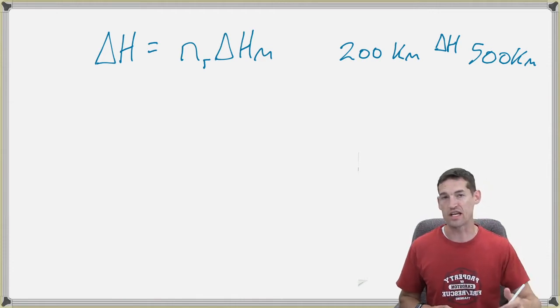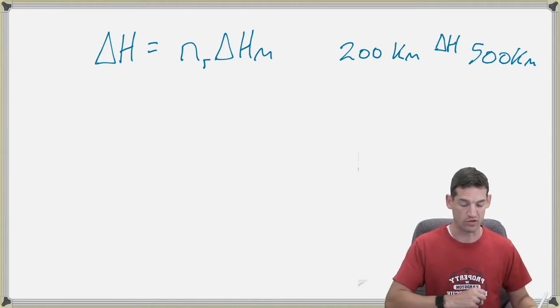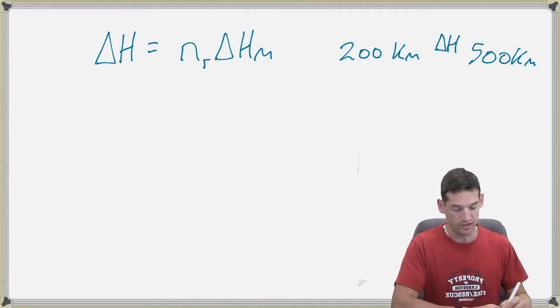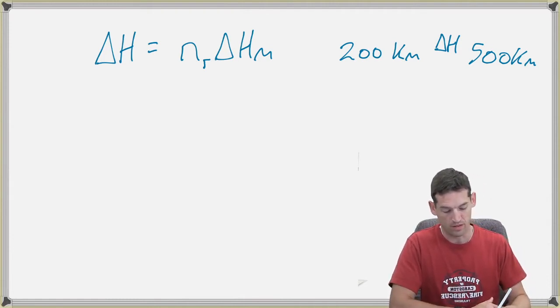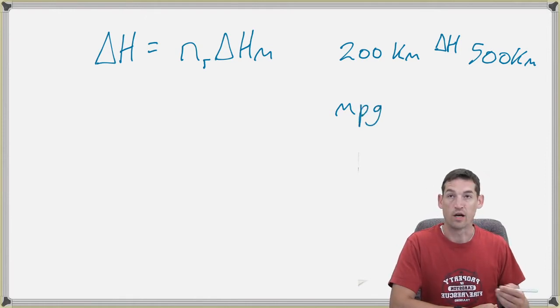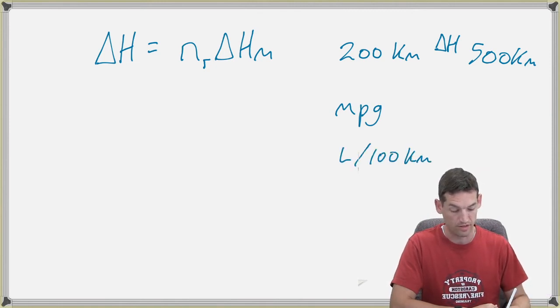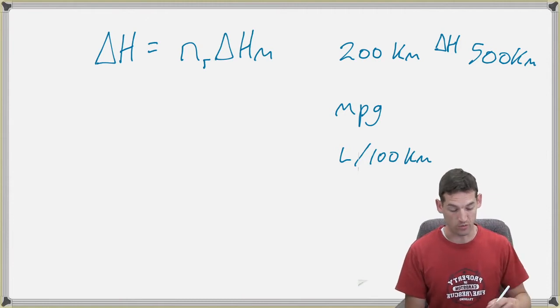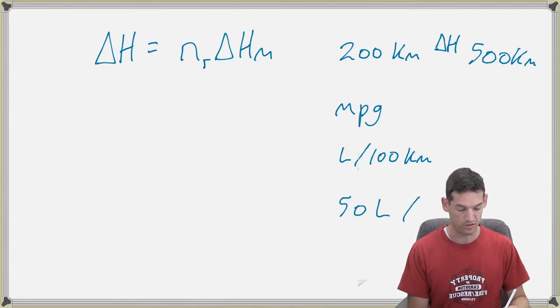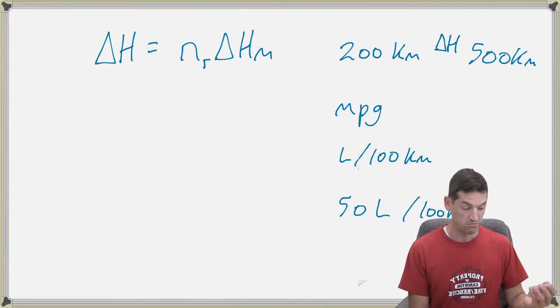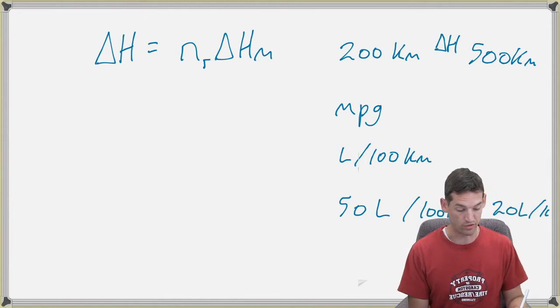Maybe this one just has a huge gas tank, and this one has a little piddly gas tank, or some other factor. So that's kind of like delta H. It's just a total. Just how far could you go? How much energy was there? But no other information to put that into context. We could take those exact same examples though and say, in my car I can go... and how do they do that metric? In the U.S. they use miles per gallon. Up here, I think it's liters per 100 kilometers is what it's usually measured in.